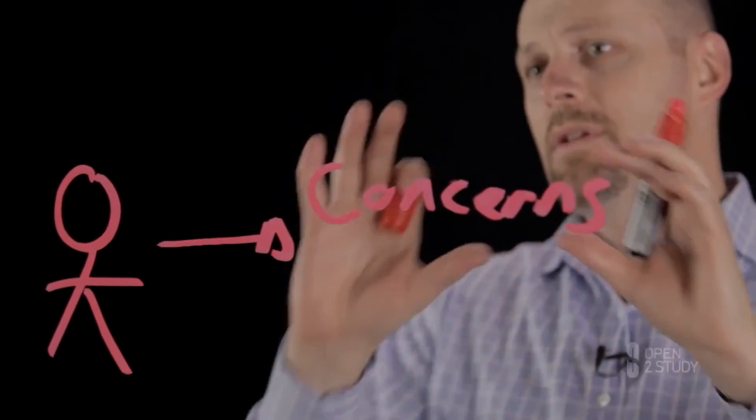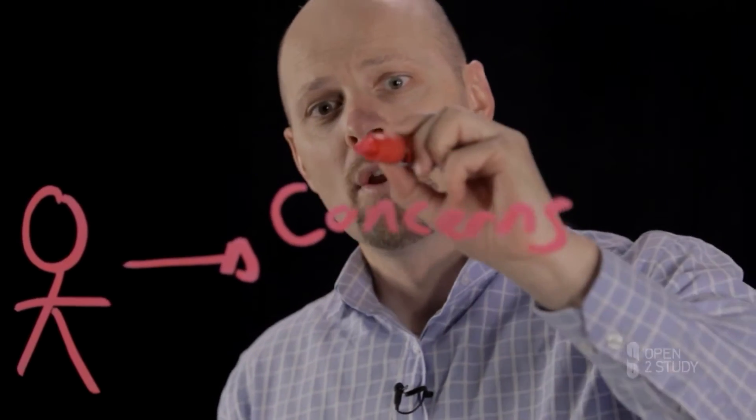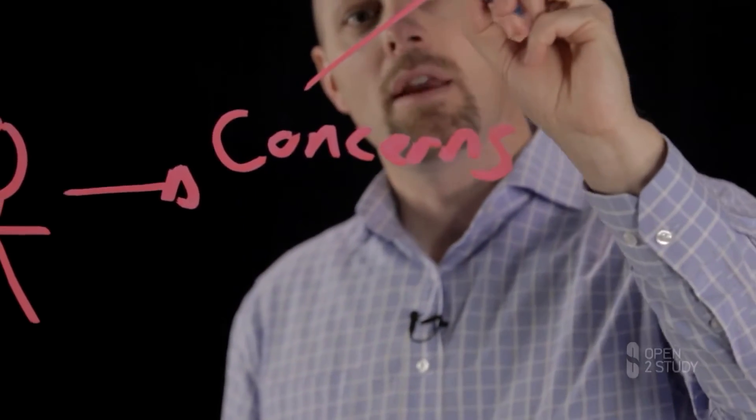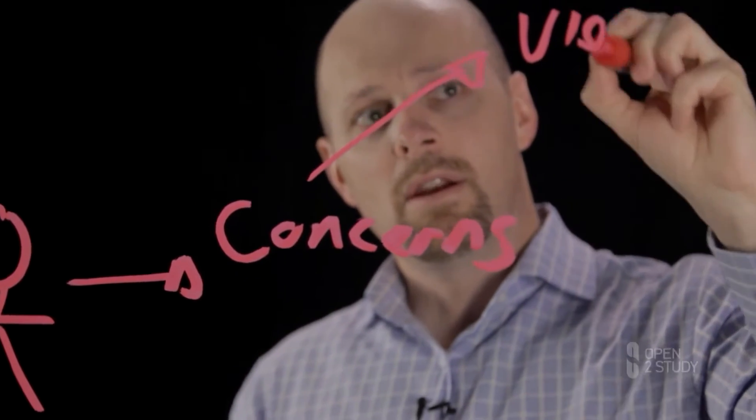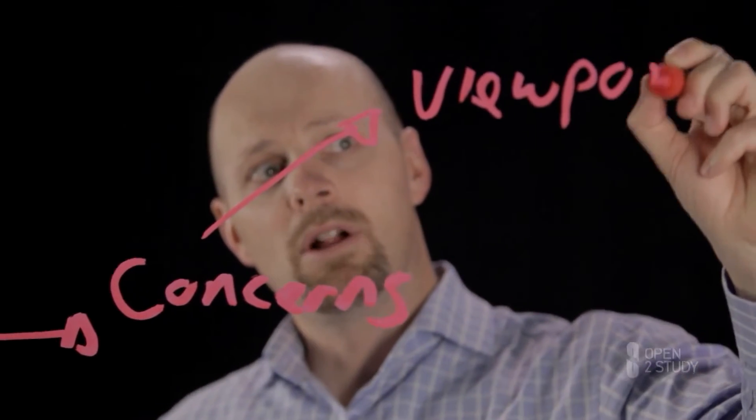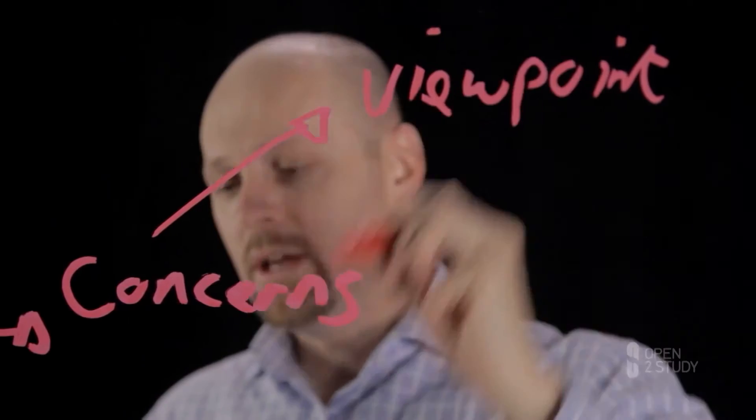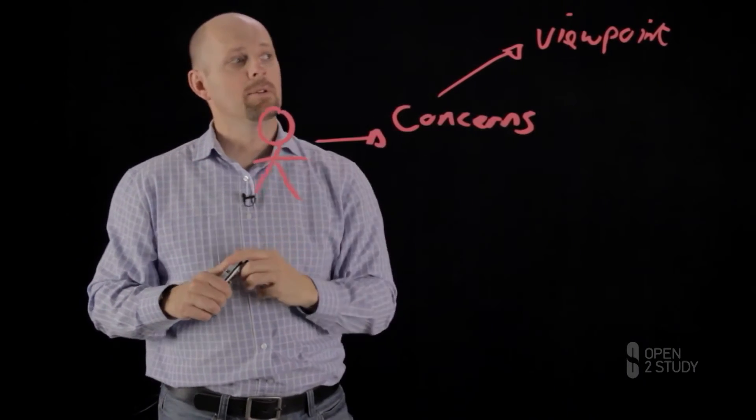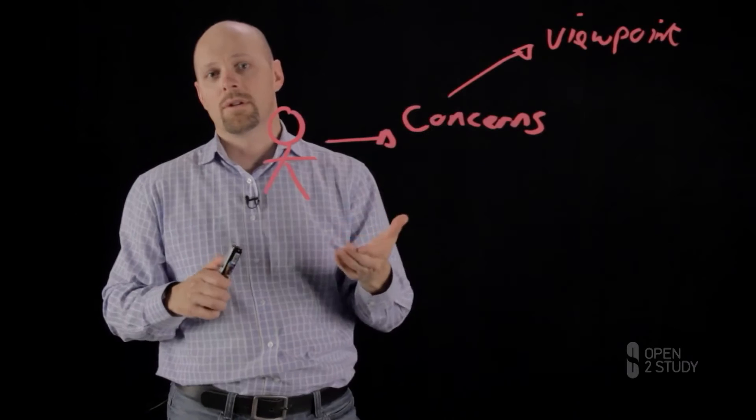So what we do is we understand what these concerns are for our stakeholder. And then we produce what's referred to as a viewpoint. Now, all that really means is it's saying, how, as an architect, am I going to be able to address this particular stakeholder's concerns?